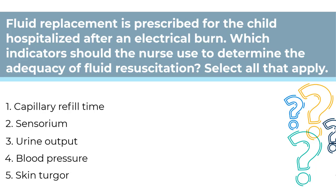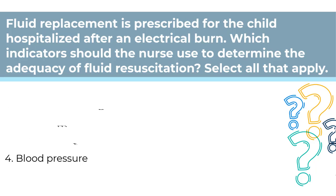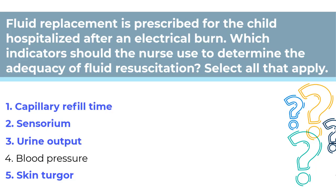This is an analysis question in the evaluation phase of the nursing process. This question is asking you to pick out the correct evaluation data to determine rehydration. The answers are 1, 2, 3, and 5 — these are all used to evaluate perfusion. Number 4 is incorrect because blood pressure can be normal even in a state of hypovolemia. A child can lose up to 20% of their fluid before it has an impact on their blood pressure.